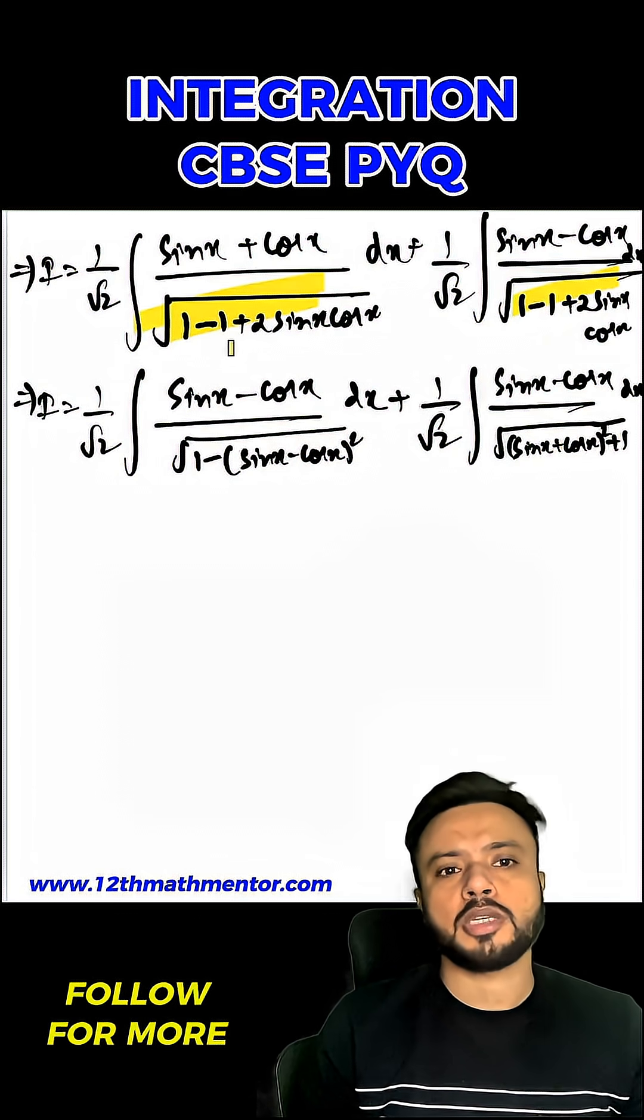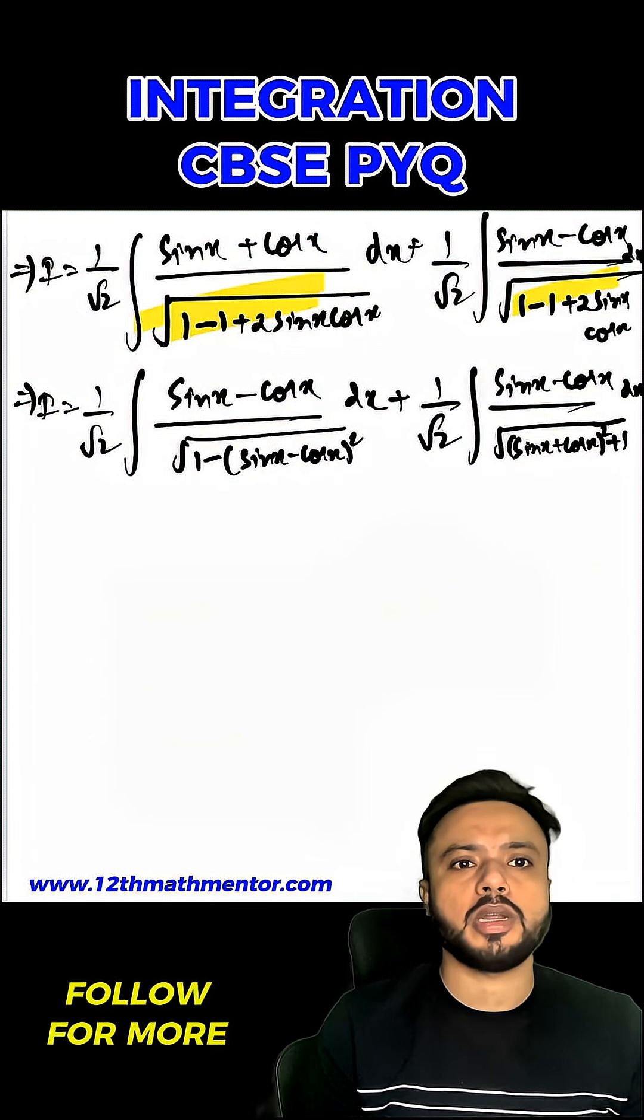Basically I wrote 1 as sin squared x plus cos squared x, and then I have used a minus b whole square and a plus b whole square identity.